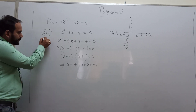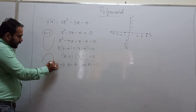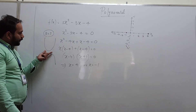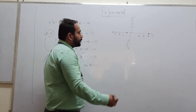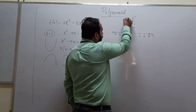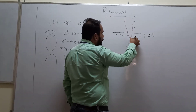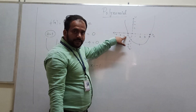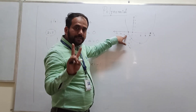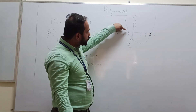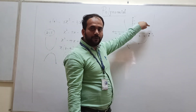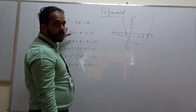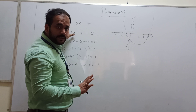The parabola looks like a U or V shape opening upward. This graph cuts the x-axis at two distinct points: minus 1 and 4. Therefore, minus 1 and 4 are the zeros of the given polynomial.